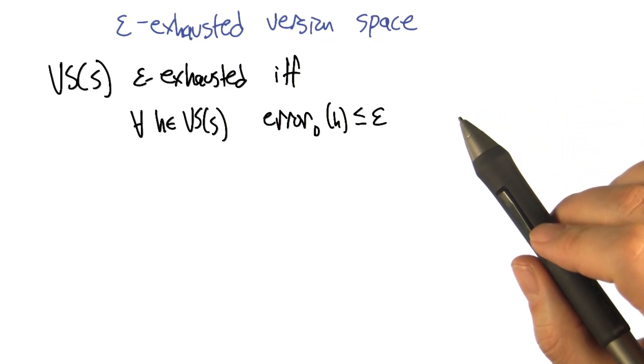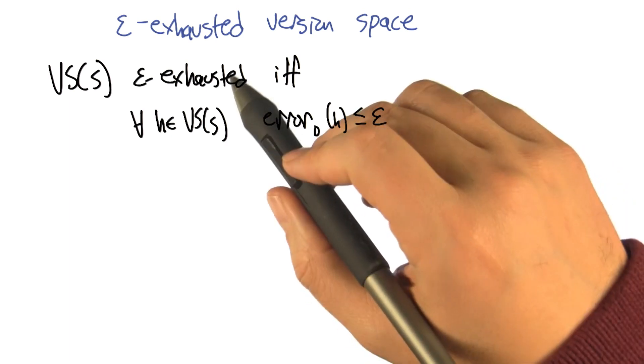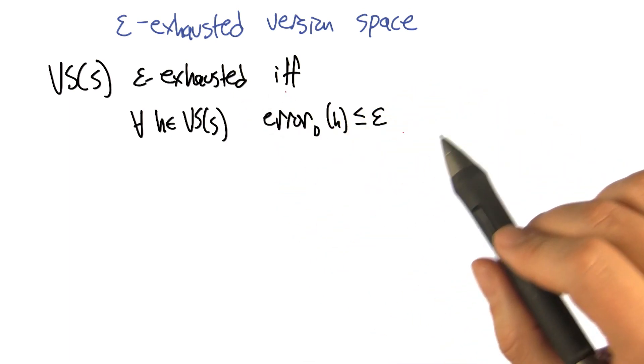So this is going to be a key concept for being able to develop an answer to questions like that. And it's the notion of epsilon exhaustion, which sounds kind of tiring.